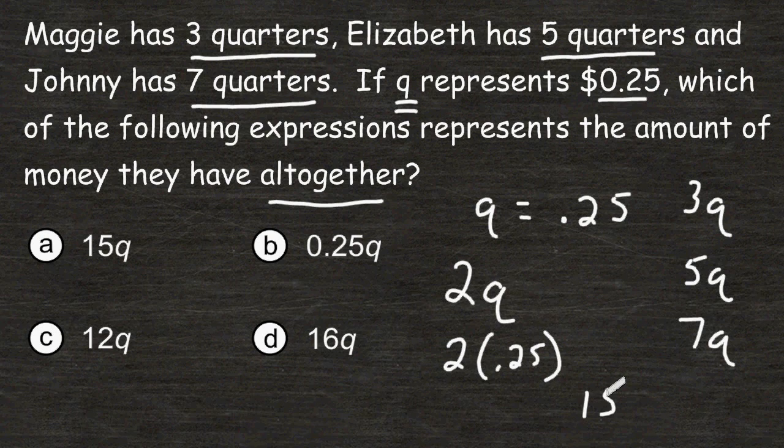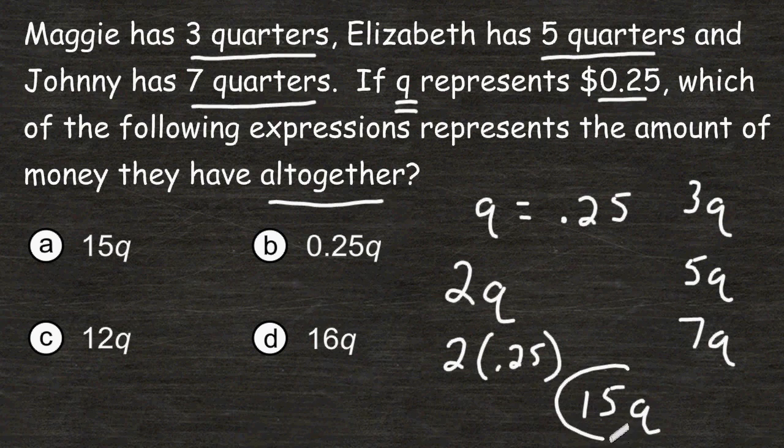So we would say that the total amount of money that they have all together would be 15Q. This is the expression that would represent that situation.